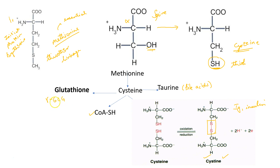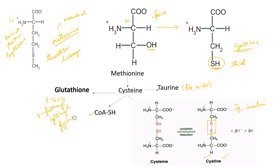What is the name of glutathione? It is actually gamma-glutamyl cysteine glycine. So it requires cysteine for its synthesis.